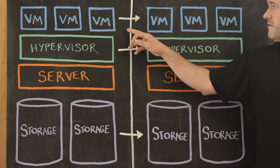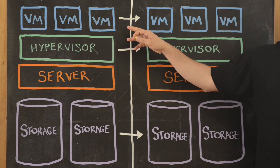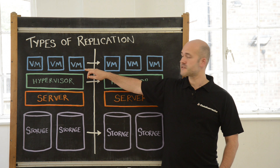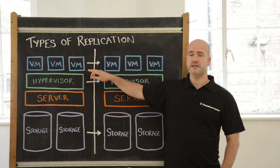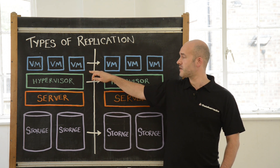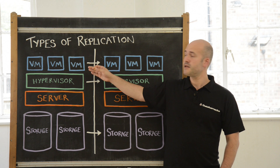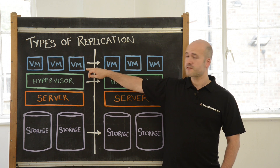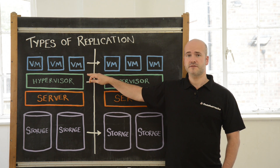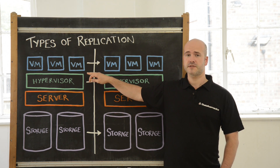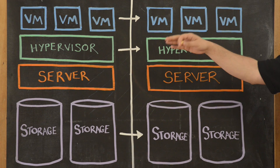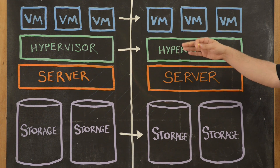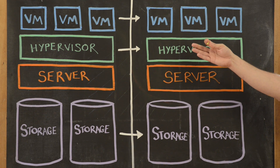Moving further up the stack you have your VM level replication. By this point it doesn't matter which hypervisor your cloud service provider is using — it could be a mixture of many. The same software used at this level can also be used for physical servers, so if you have a mixed environment it works well and it means that you're able to recover all your machines with your DR service provider.